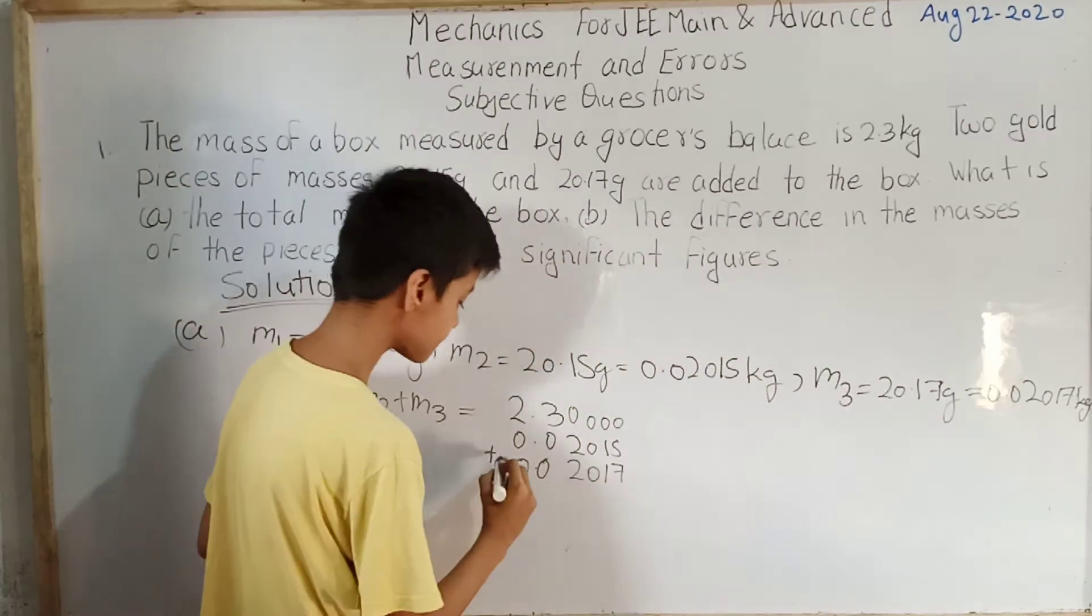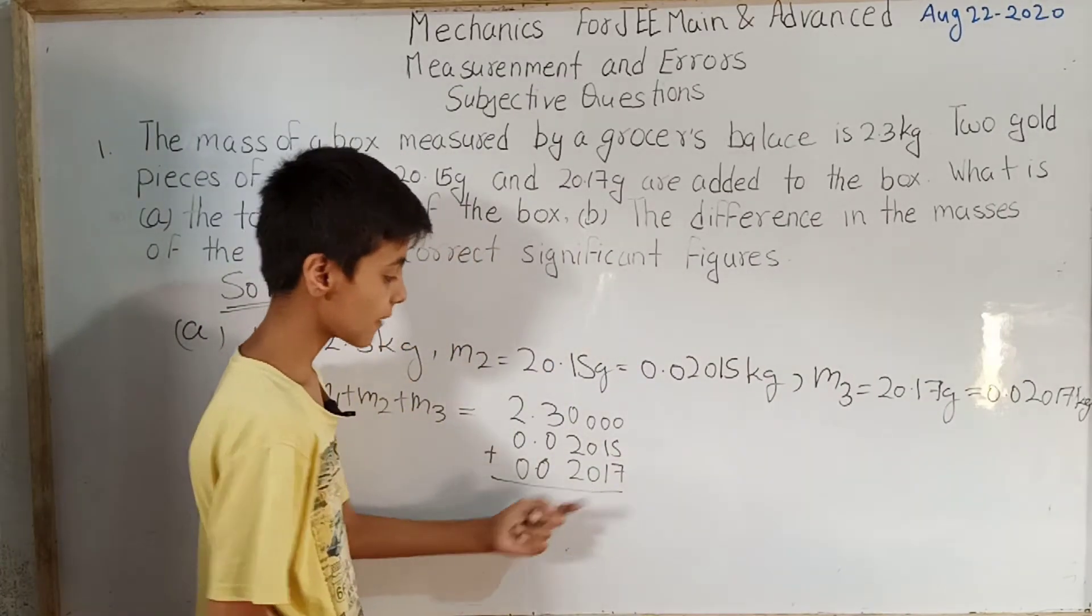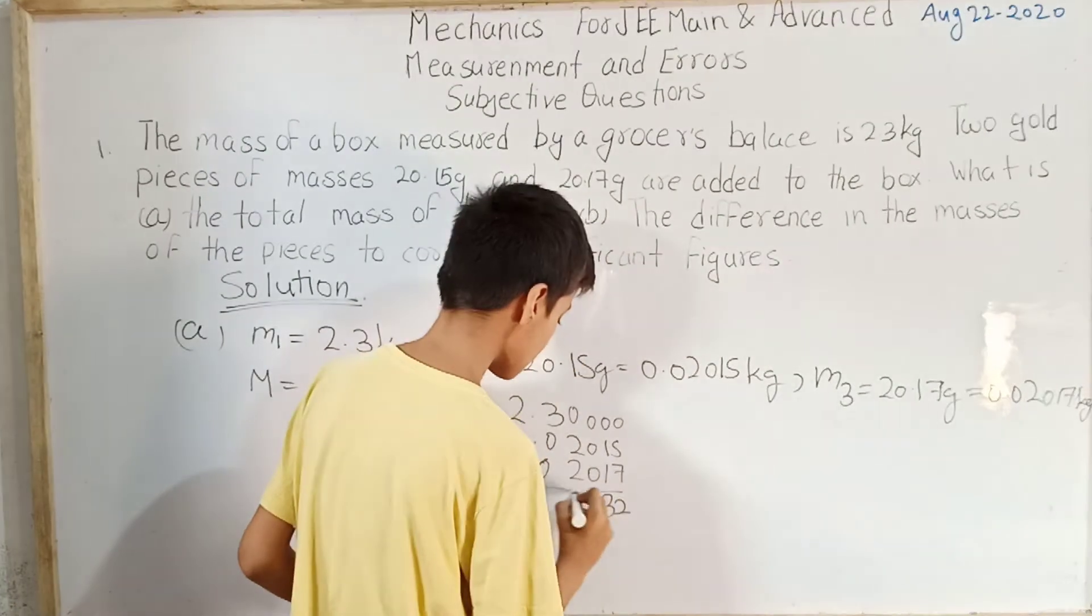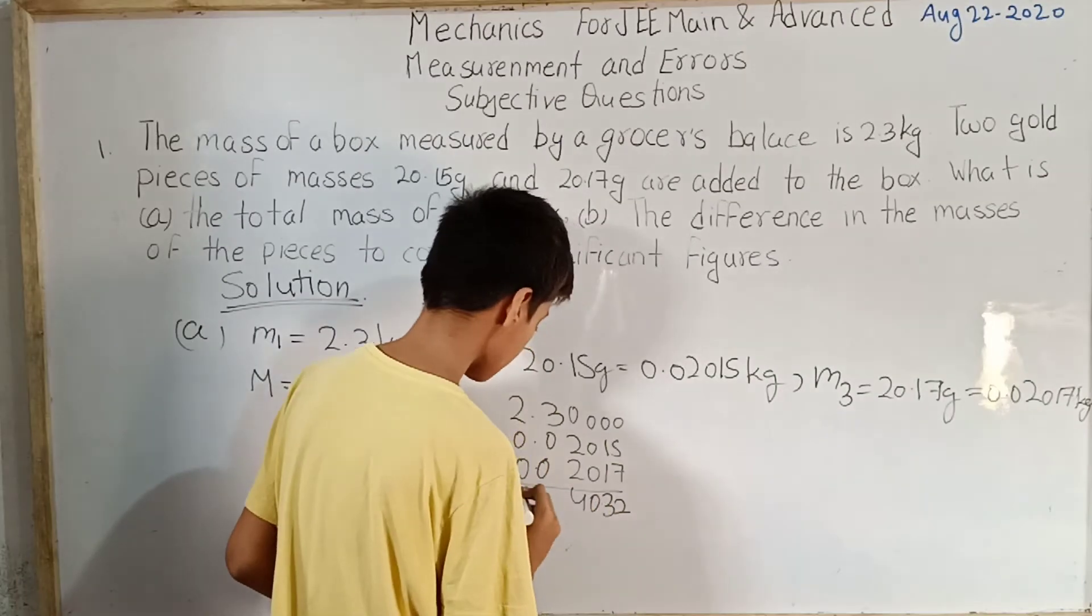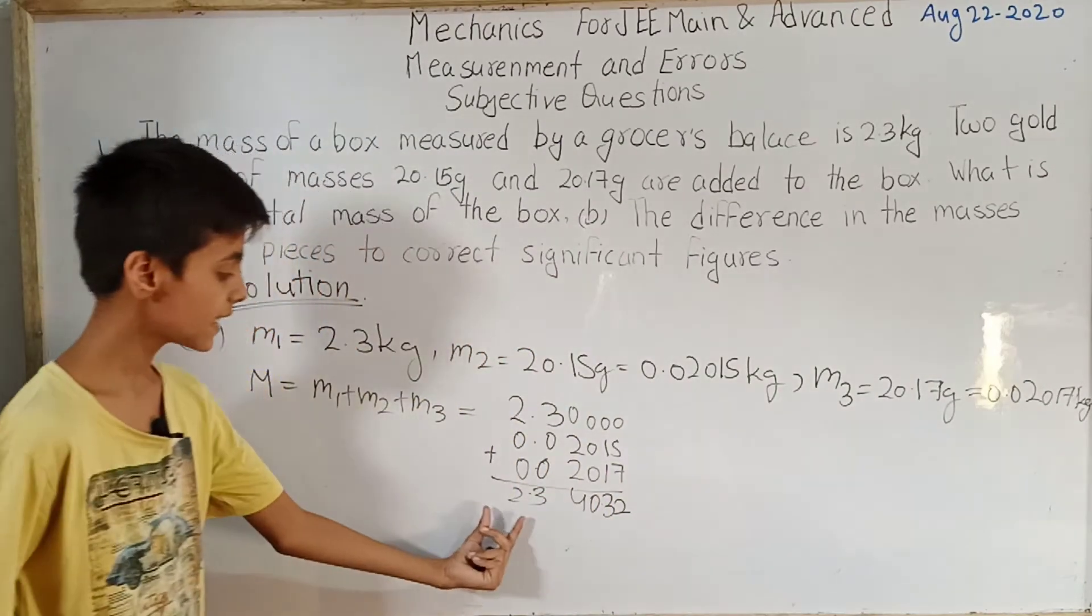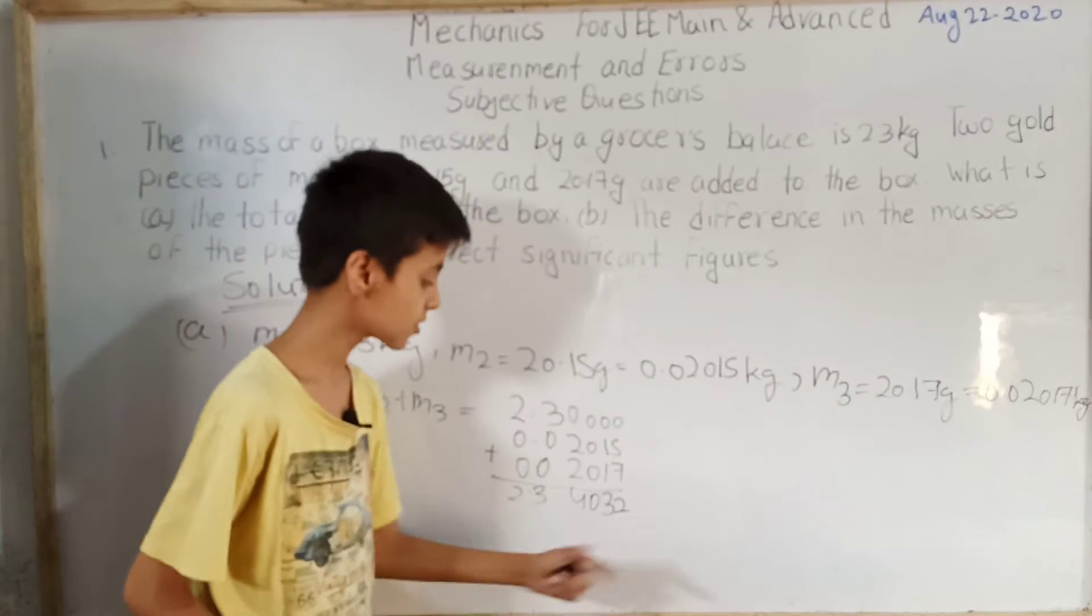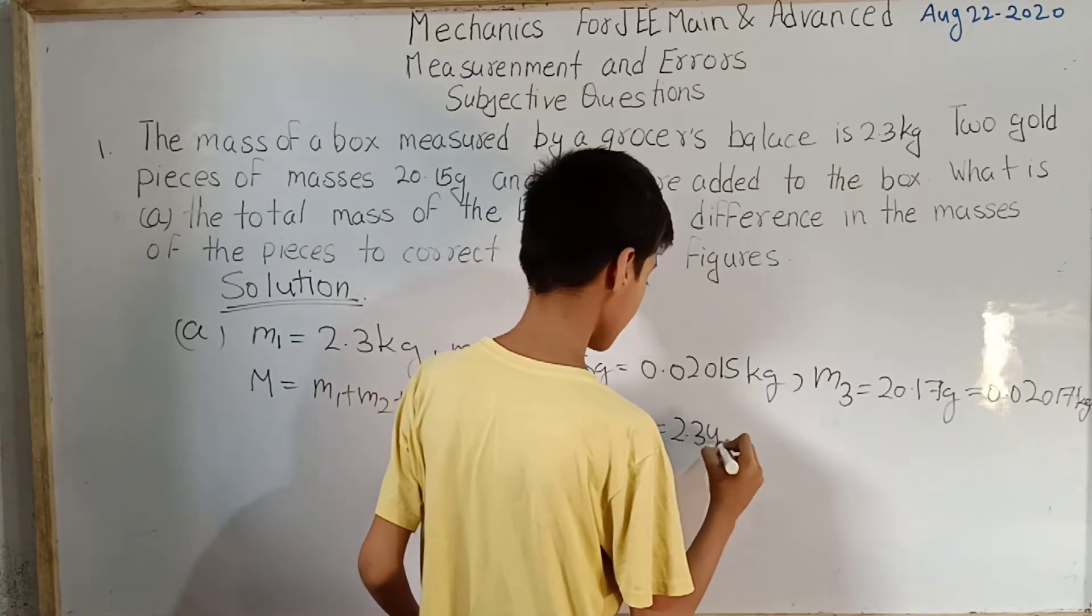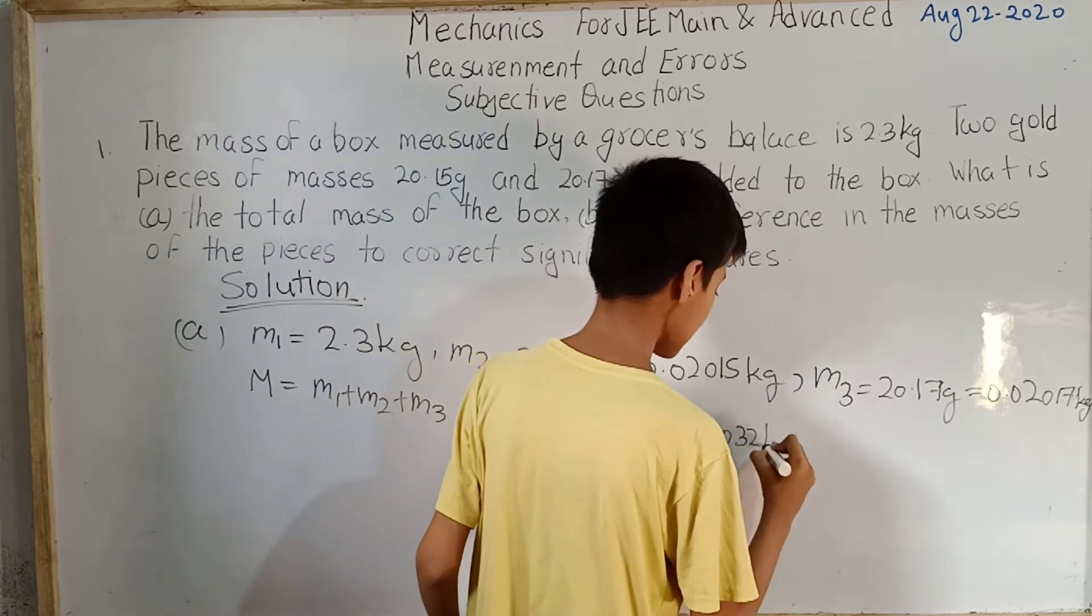Now we will add them all. 7 plus 5 is 12, carry 1, then 1 plus 2 is 3. So we get 2.34032, which equals to 2.34032 kg.